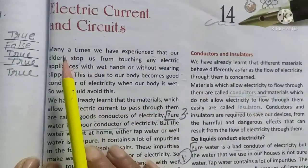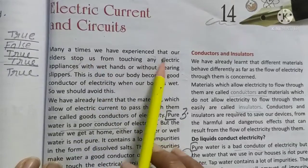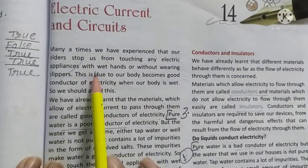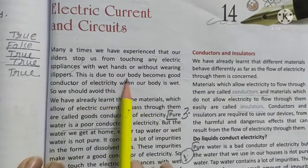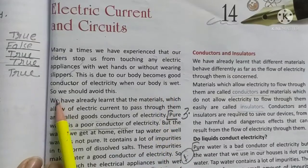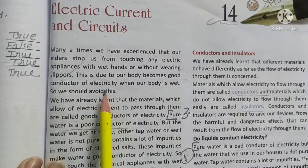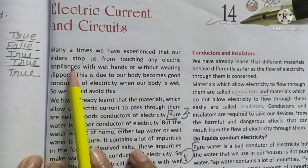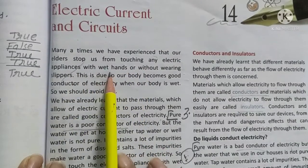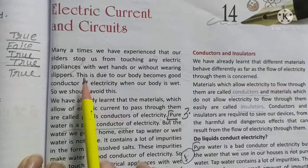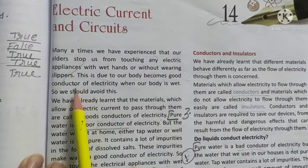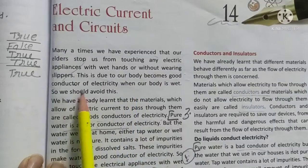Many times we have experienced that our elders stop us from touching any electric appliance with wet hands or without wearing slippers. This is because our body becomes a good conductor of electricity when our body is wet. We should avoid touching any electric appliance with wet hands.